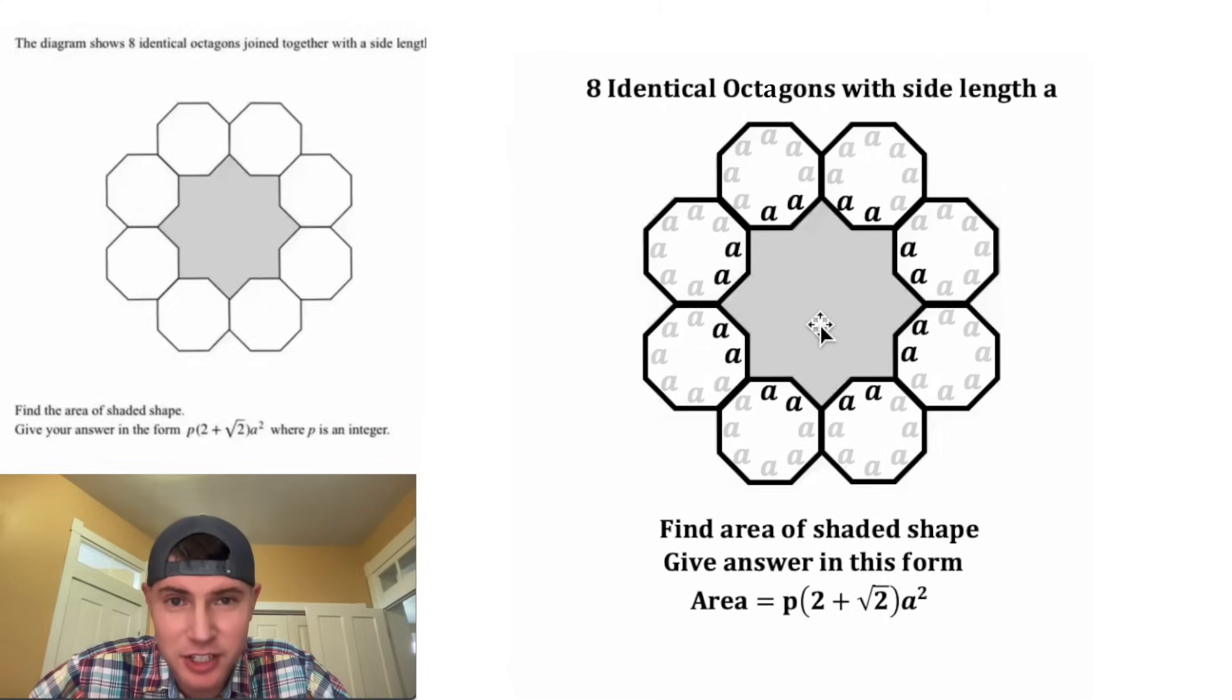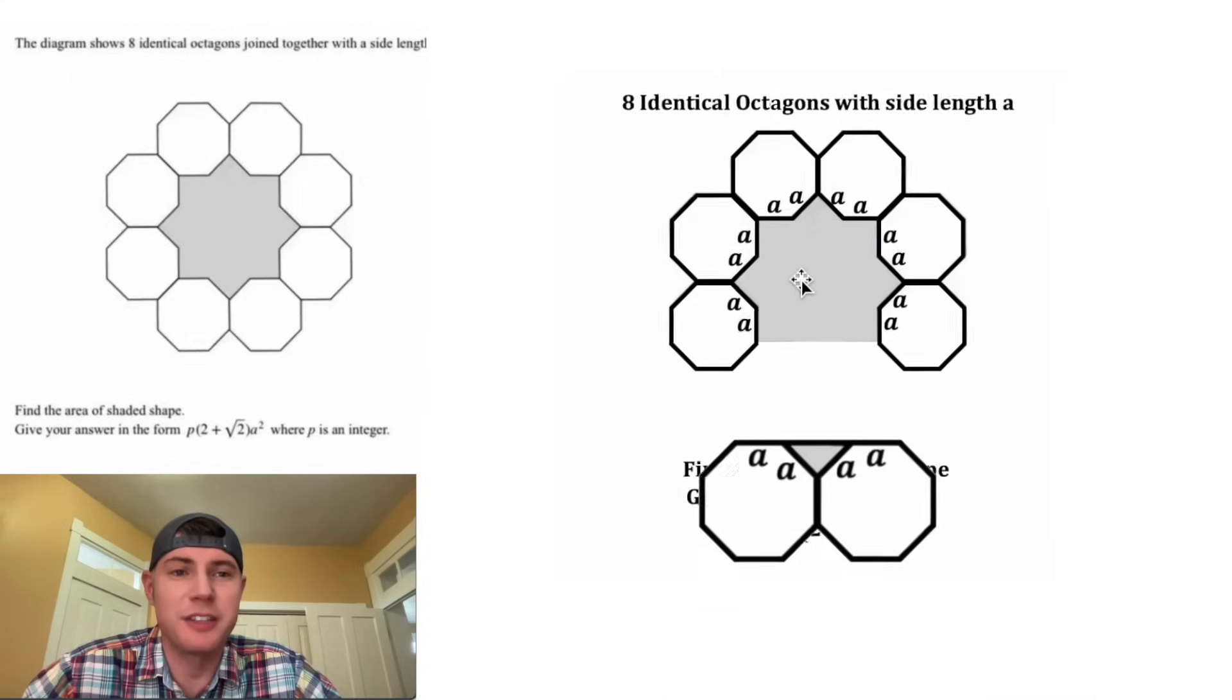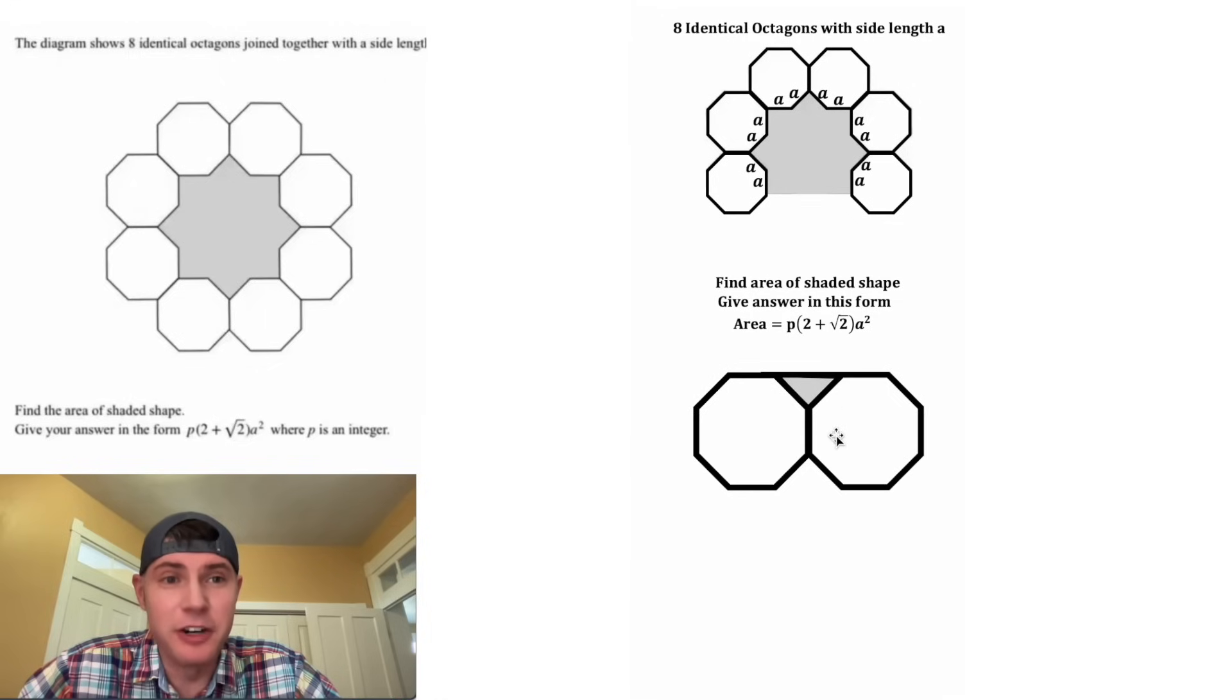Now we're gonna focus on the A's that touch our shaded region. If we were in the middle of a test, I would just assume all of these were right angles, but there is a way to prove it. Let's connect this piece right here and pull this out. Now let's look at these interior angles.